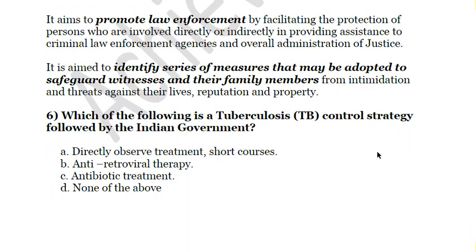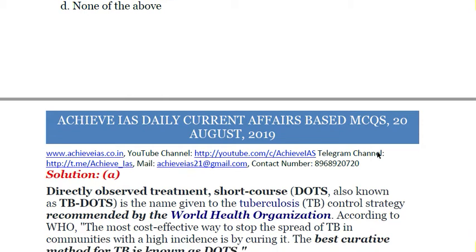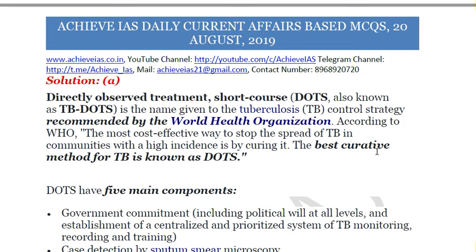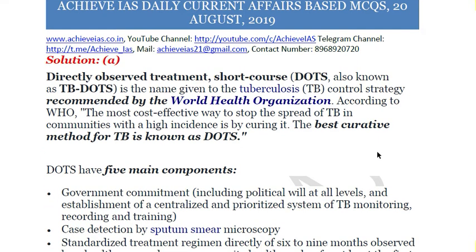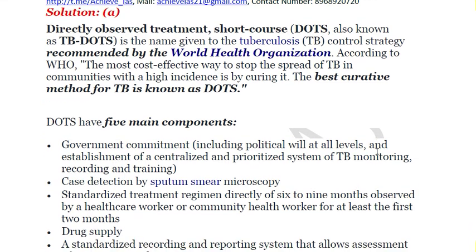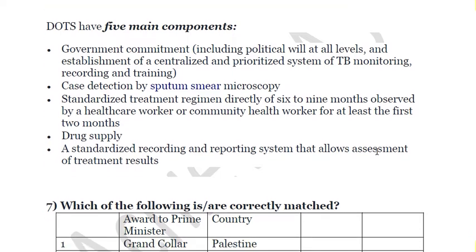The sixth question: which of the following is the tuberculosis control strategy followed by the Indian government? A — Directly Observed Treatment Short Course (DOTS). B — Antiretroviral therapy. C — Antibiotic treatment. D — None of the above. The correct answer is A — DOTS. This is the best curative treatment recommended by the World Health Organization. It has five main components: government commitment including political will at all levels, case detection by sputum smear microscopy, standardized treatment regimen, drug supply, and a standardized recording and reporting system to assess treatment results.